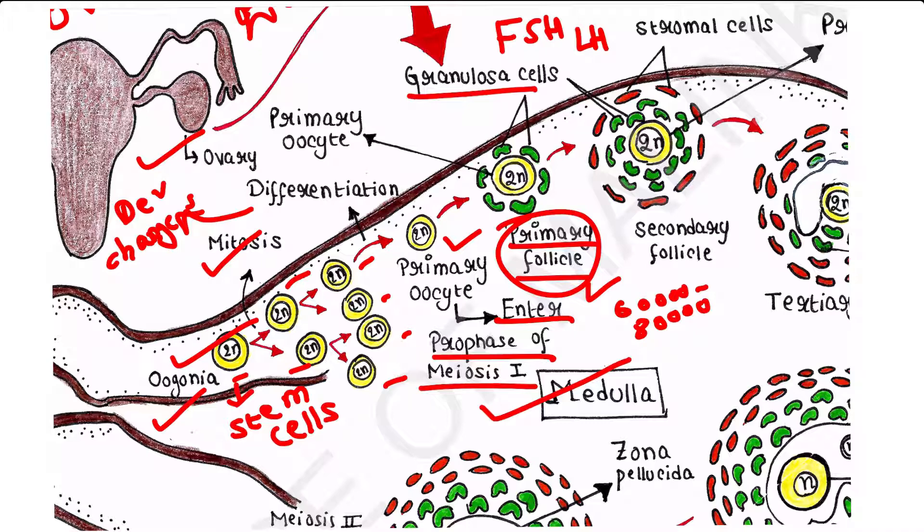Although only one will reach the maturity stage. Only one primary follicle will reach the maturity stage in every month after puberty.